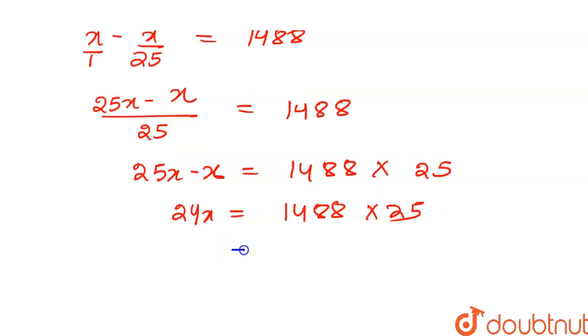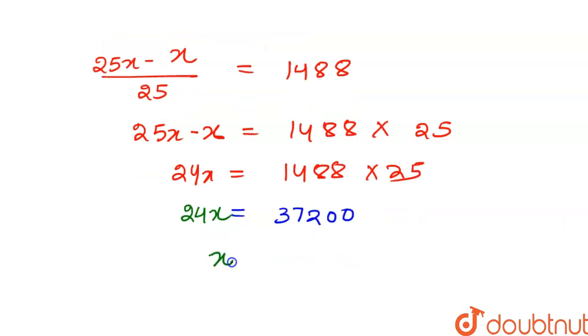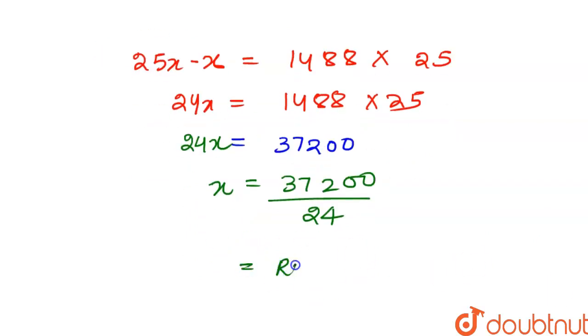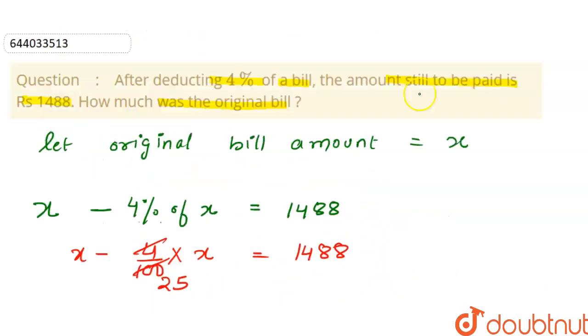24x will be 1488 into 25. So after multiplying these two digits, we will get 37,200 rupees. And here we have 24x. So we can see that 24 is in multiply with x, so it will be divided here on the right hand side. And when we divide them, we will get rupees 1550. That means 1550 rupees as the actual. So the total bill was rupees 1550.